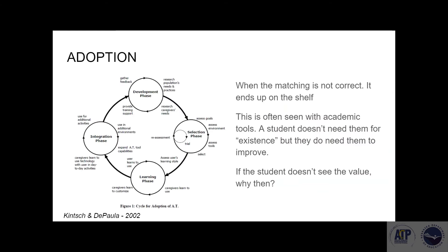When we talk about adoption, we need to understand that there are phases that everything goes through. So we start by taking a look at Kinch and DePaula from 2002, where they talk about these four phases. The selection phase, which is like our assistive technology consideration. The learning phase, where we get everybody involved so they can understand the tool. Integration, getting it into the environment. And then developing, getting more use out of a tool, finding more novel ways to use it.